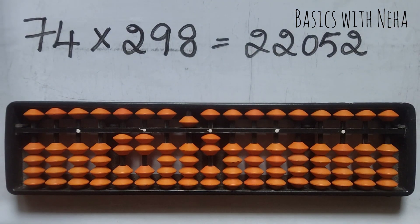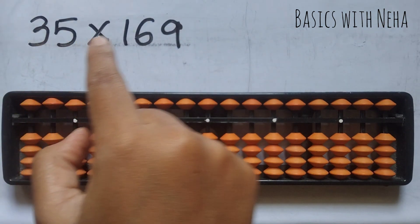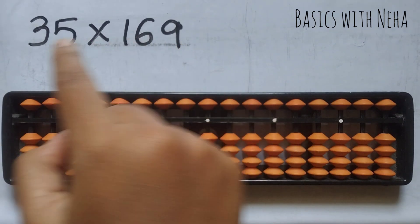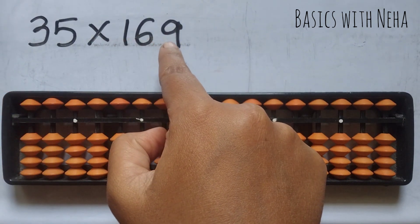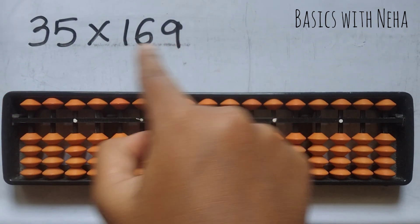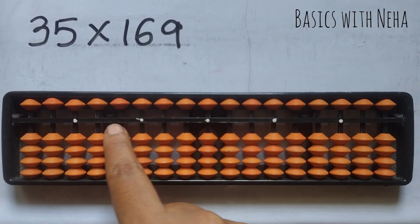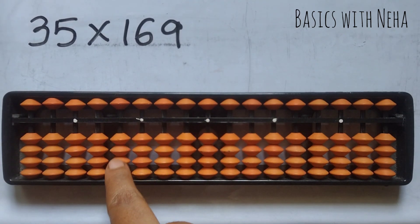The next question: 35 into 169. So first we have to choose the number of rods we have to take. There are 5 numbers, so choose the 5th rod from the house pointer 1s rod, that is the 10,000s place.